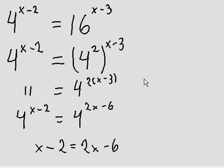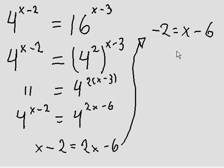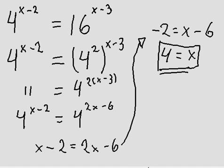And then it just basically turns into a simple algebraic equation. I can subtract x from both sides — this x will be gone, and 2x minus x is just x. Then I will add 6 to both sides: negative 2 plus 6 is 4. So 4 is equal to x — that's the answer. Thank you, that's all for this question, and you guys can try harder ones later.